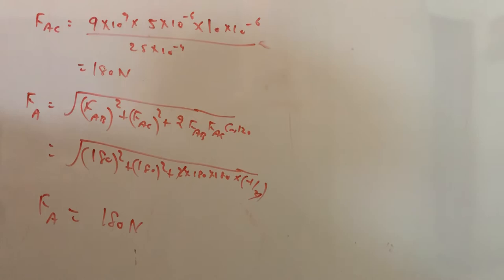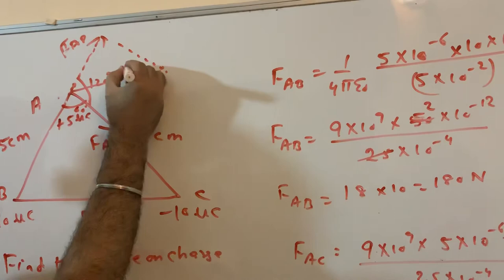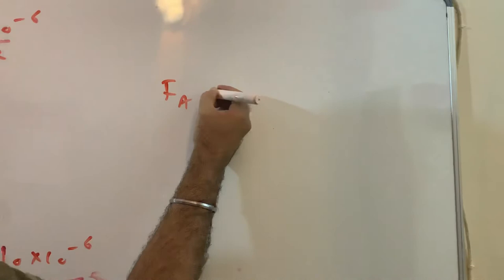So the resultant force on charge A will be 180 N. Now these two forces are equal in magnitude, so F_A will bisect this angle. So 60°, the resultant force is 180 N.